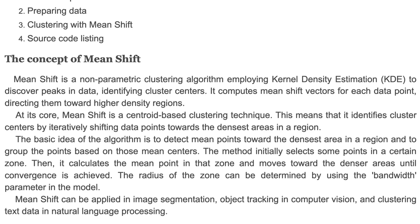The basic idea of the algorithm is to shift mean points toward the densest area in a region and to group the points based on those mean centers. The method initially selects some points in a certain zone, then calculates the mean point in that zone and moves toward the denser area until convergence is achieved. The radius of the zone can be determined by using the bandwidth parameter in the model. MeanShift can be applied in image segmentation, object tracking, and clustering text data.